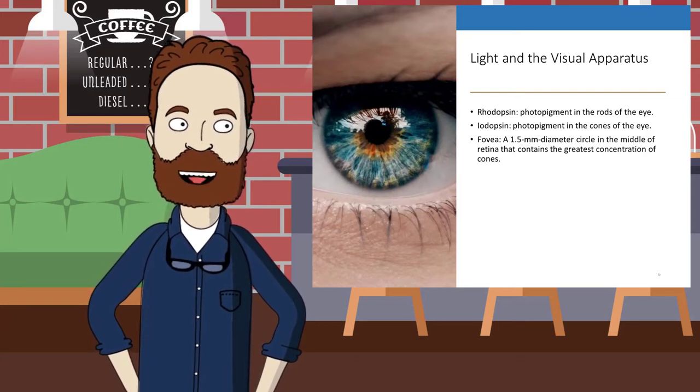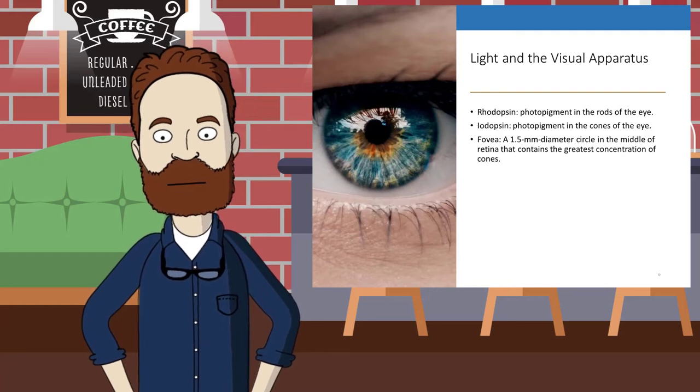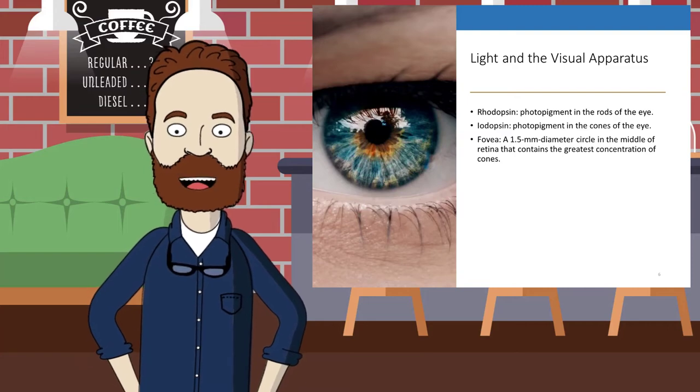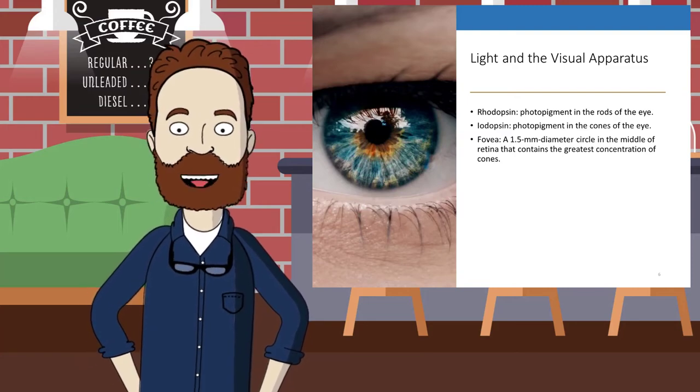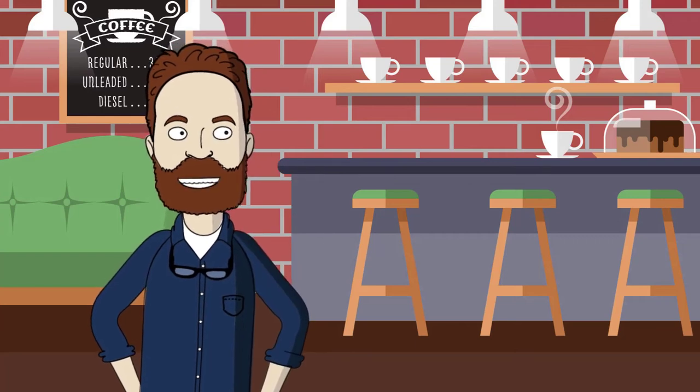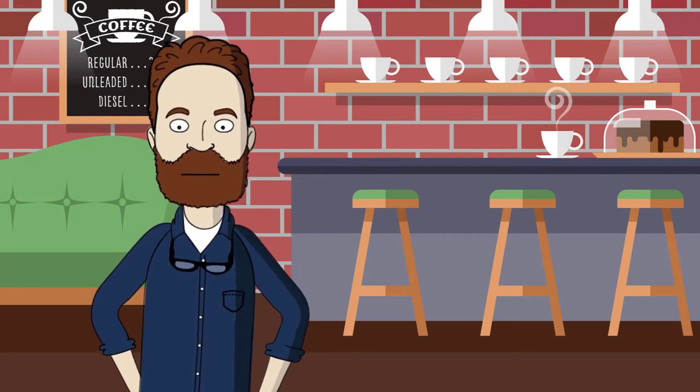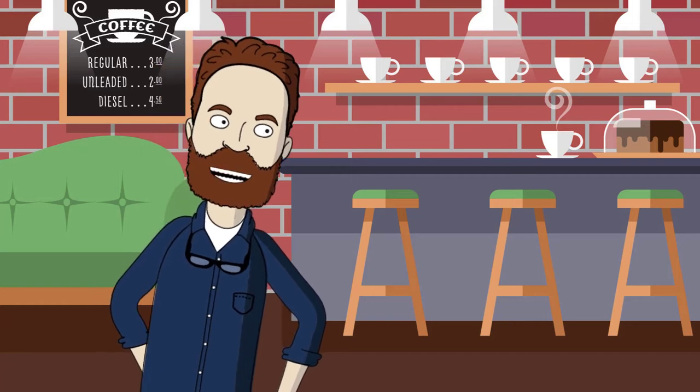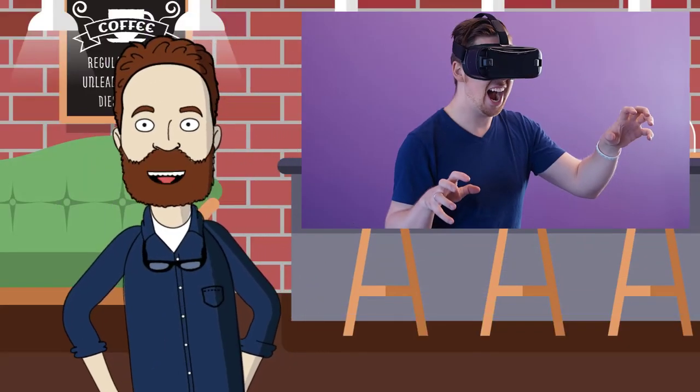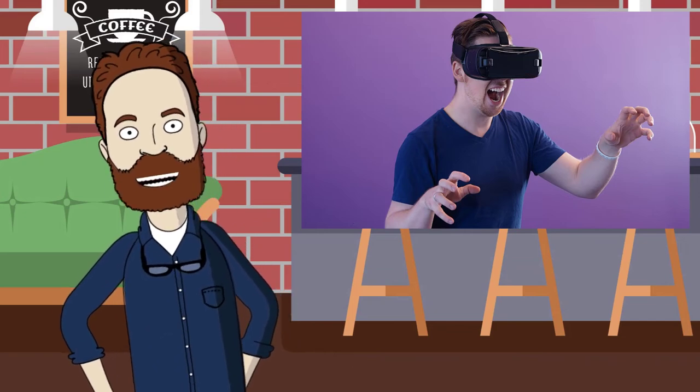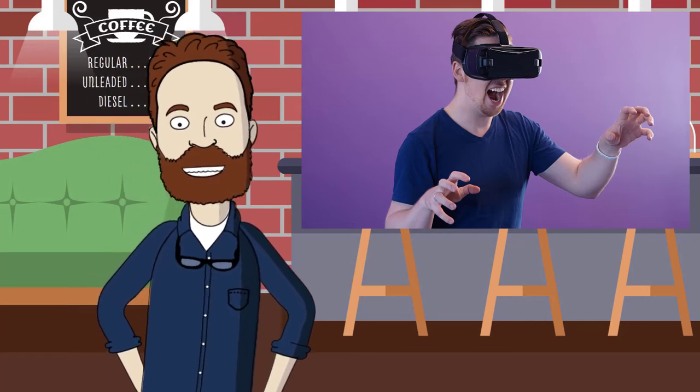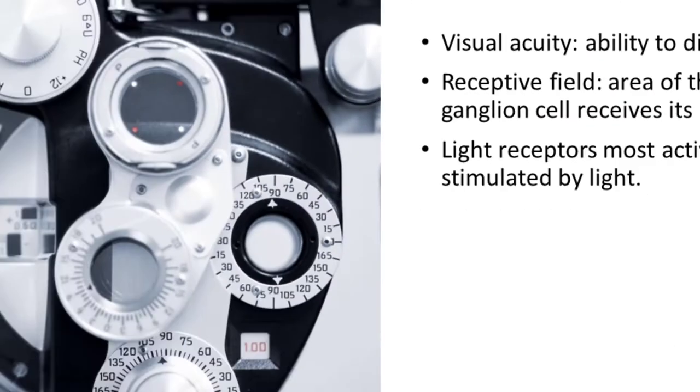In the center of the fovea, one cone synapses on a single bipolar cell, which synapses on a single ganglion cell. The number of cones per ganglion cell increases with distance from the center but remains small compared to rods. Interestingly enough, the fovea is where you have your best vision. If any of you follow VR, they're doing something called foveated rendering, and that's really just to provide the best rendering of the visuals right there where you'll see in your fovea.